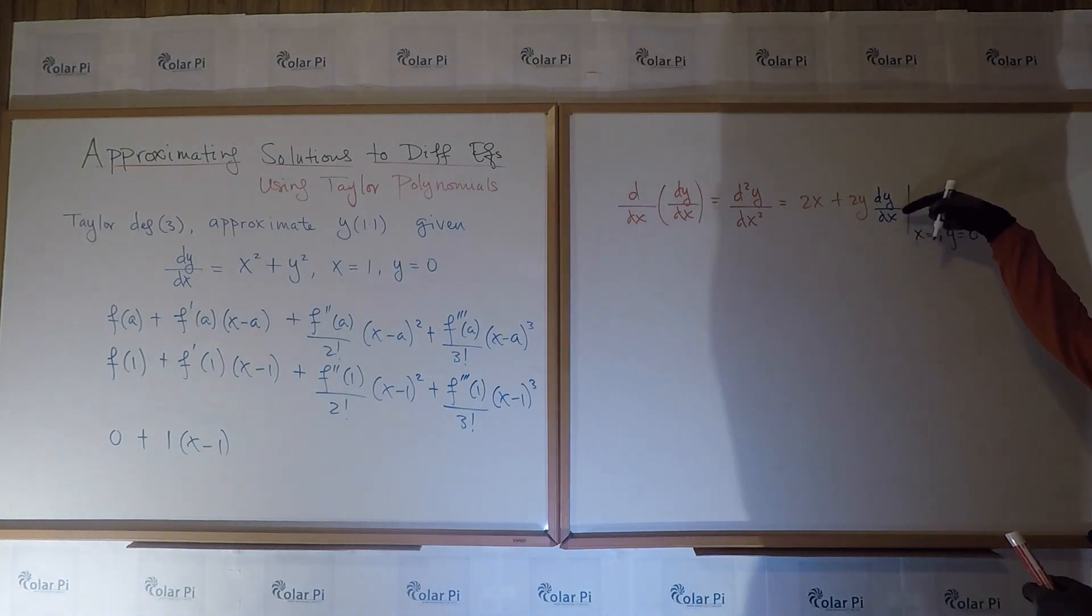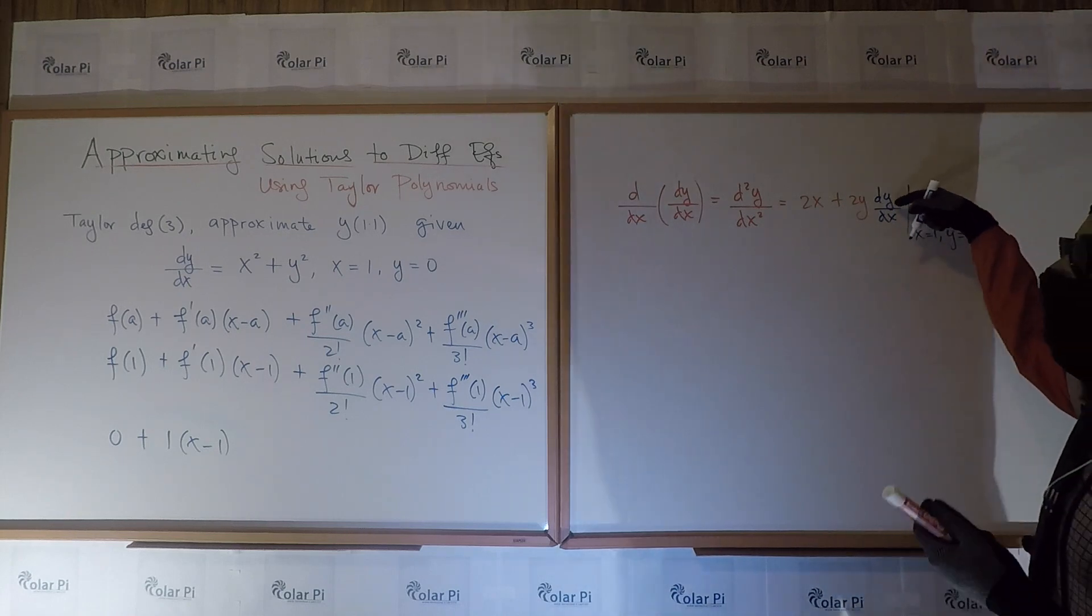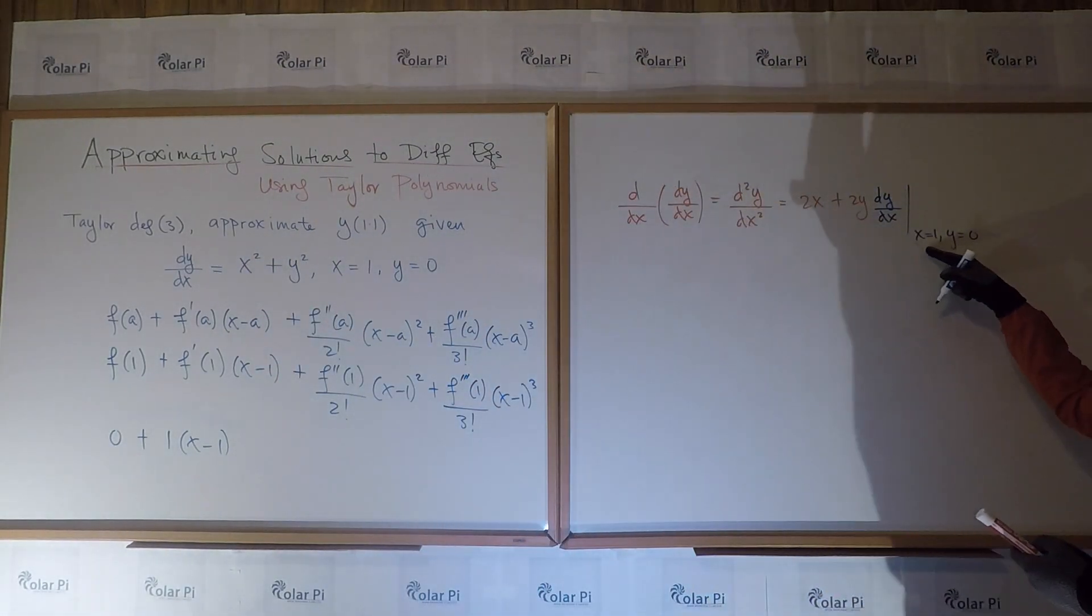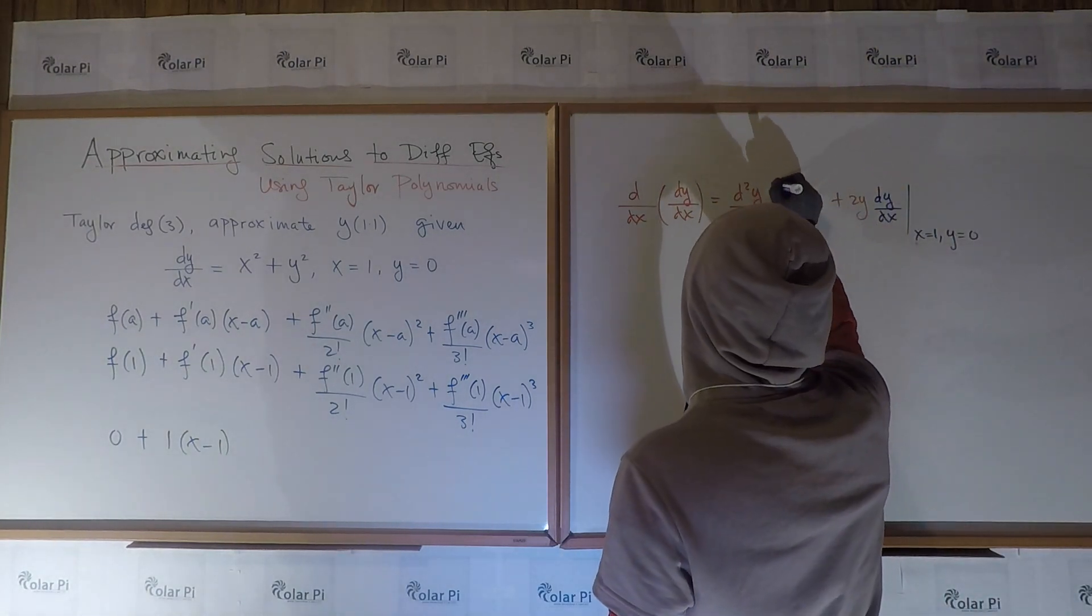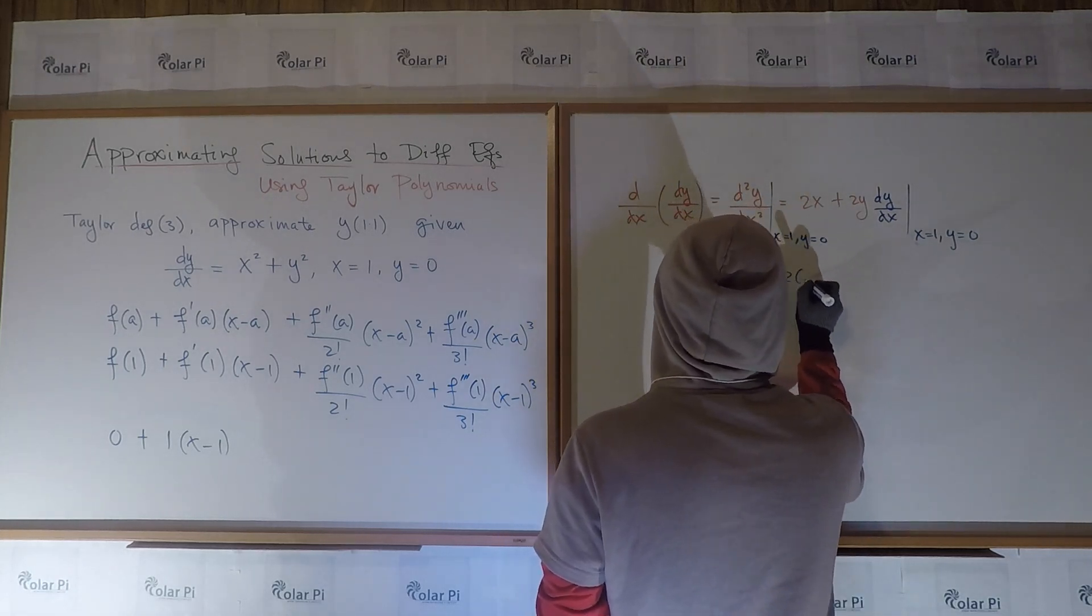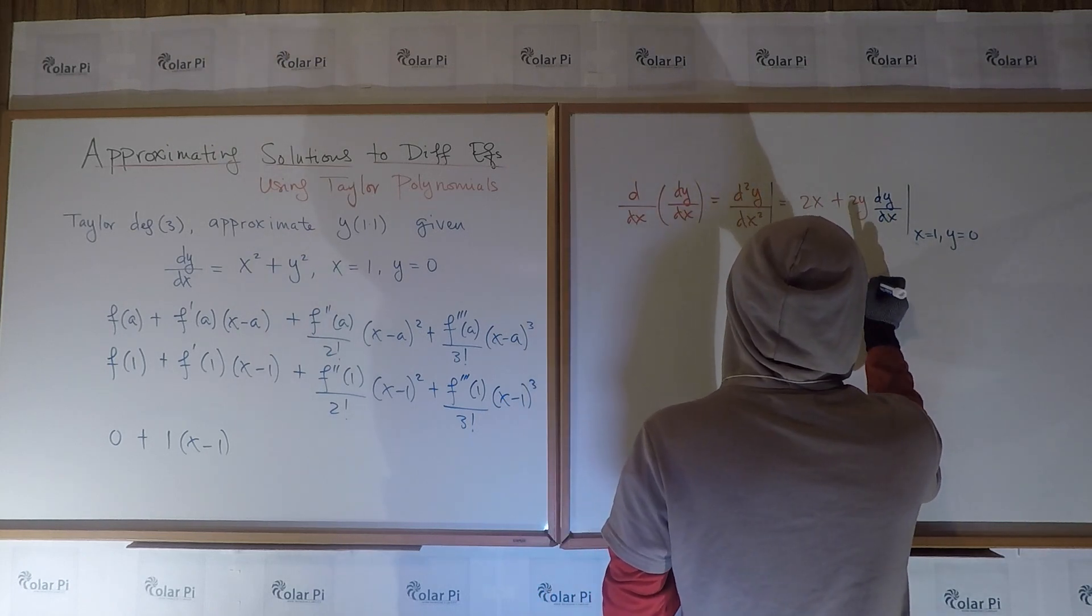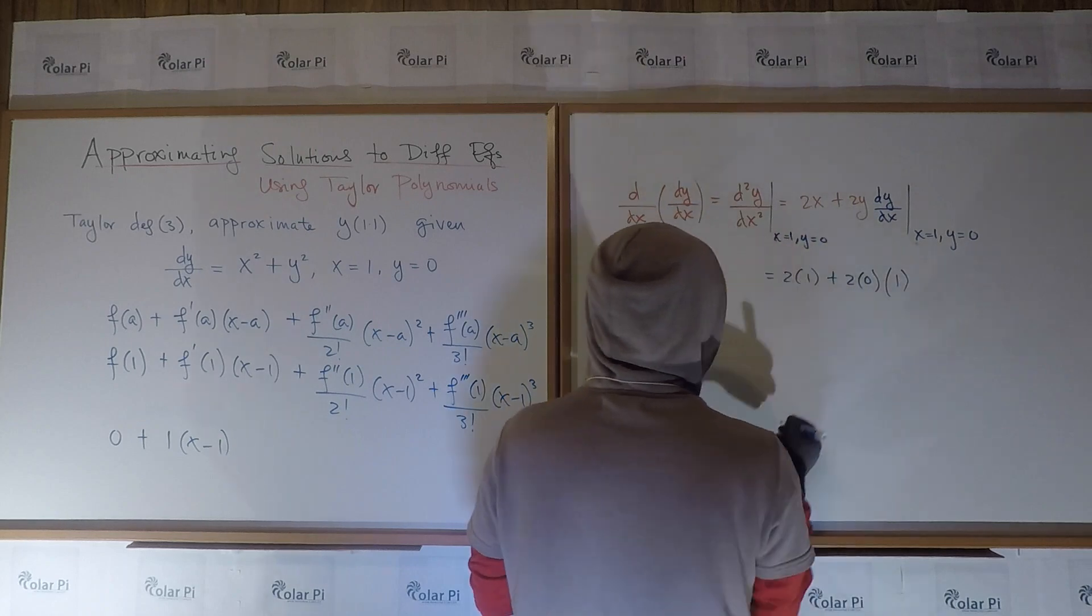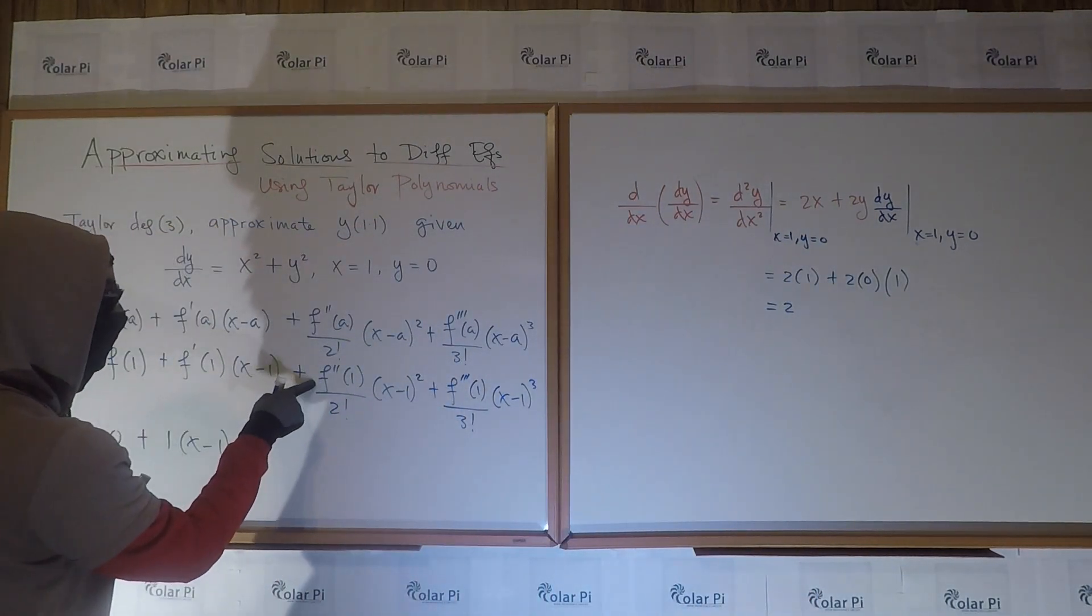So 0 plus we have 1 times x minus 1, and now we have a little bit of work to do. Not in these parts. These parts are clearly defined, but for finding f''(1) and f'''(1), that's what we have left to do. So since we have the first derivative, the second derivative would be the derivative of the first derivative. So if we do d/dx of dy/dx, we get the second derivative. This is d²y/dx².